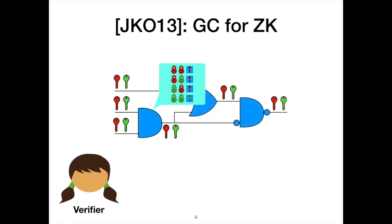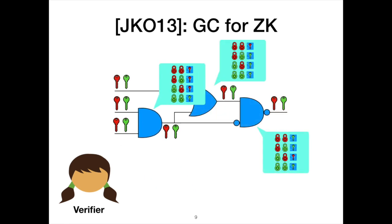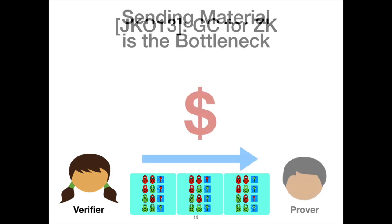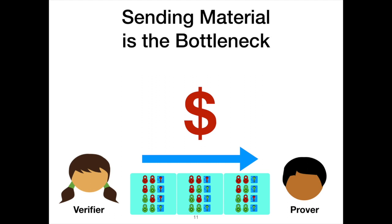Alice encrypts the circuit for every gate — this is standard garbled circuits. In the garbled circuit protocol, Alice constructs these collections of encrypted truth tables, which we refer to as the material. She takes this material and sends it over a network to Bob. This sending of material is the most expensive part of garbled circuits and therefore the most expensive part of the JKO paradigm for zero-knowledge. Decreasing this communication — this sending of material — is what our work is really about.